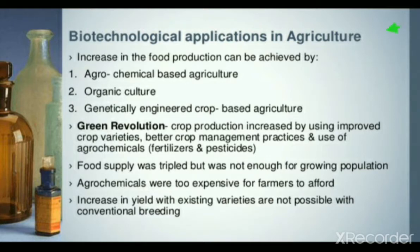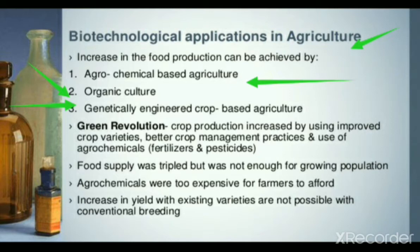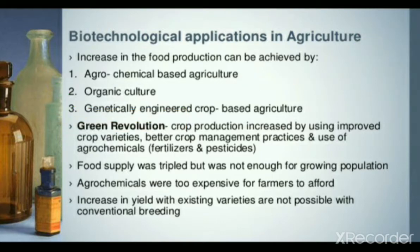Biotechnology applications in agriculture: in applications ko samjhein to food production se mainly important role hoga. Humara food production increase karna hai, humari yielding ko high karna hai. Aur usse hum achieve kar sakte hain teen methods ke through — first, agrochemical-based agriculture; second, organic culture ka formation; ya phir genetically engineered crop-based agriculture ka formation karke. First thing aati hai about the Green Revolution.